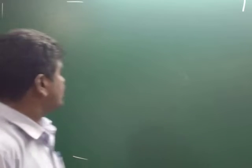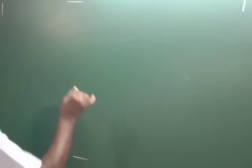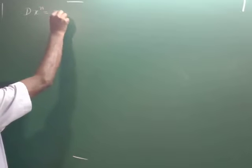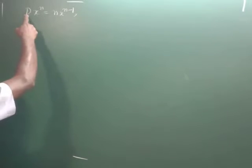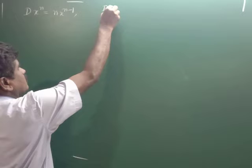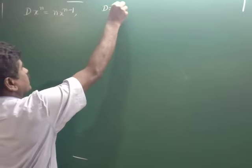Now let's see the basics. The derivative of x to the power n is equal to n into x to the power of n minus 1, where n is any rational number. Note that capital D is always equal to d by dx.